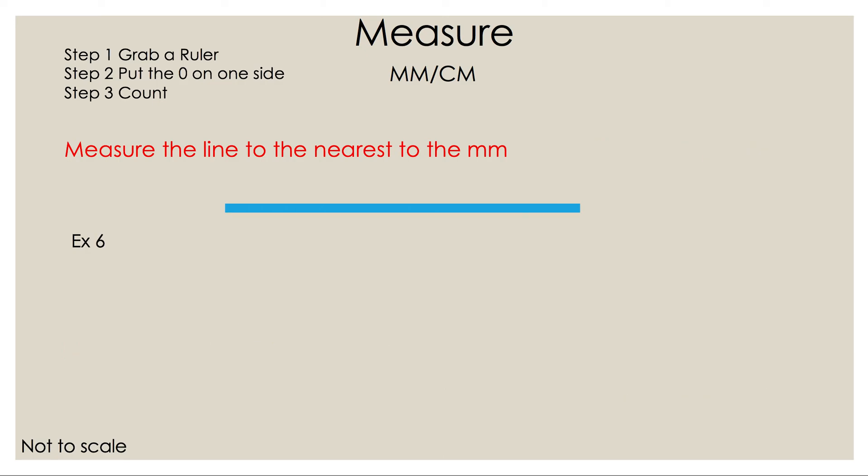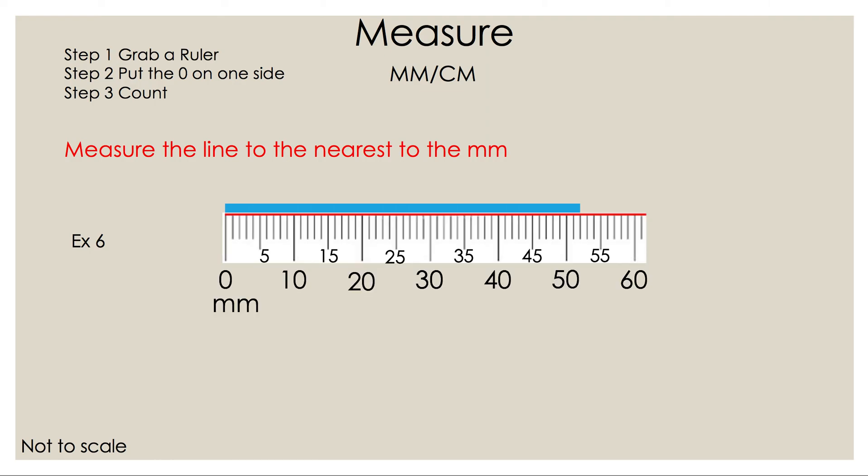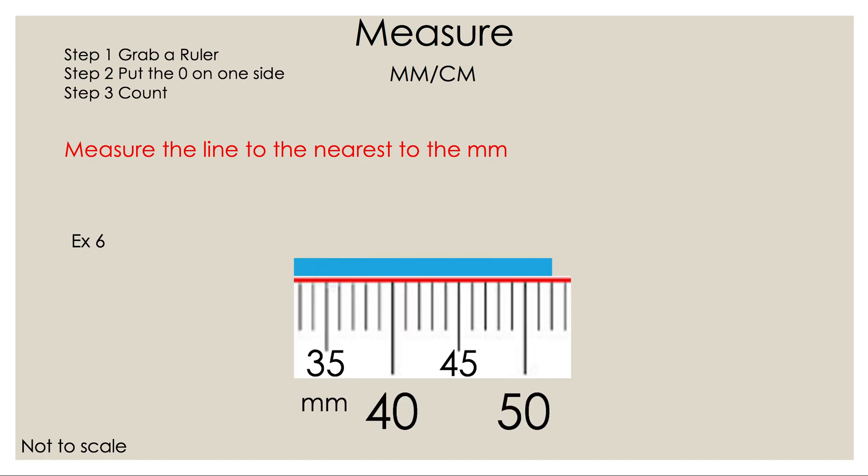Let's take a look at the last example. We're still with millimeters. Now we're going to move the ruler to the line. Let's blow it up. Let's start counting at 50 because that's the closest line with the number next to the end of the line. Let's start counting up 51, 52. So the answer is 52 millimeters.